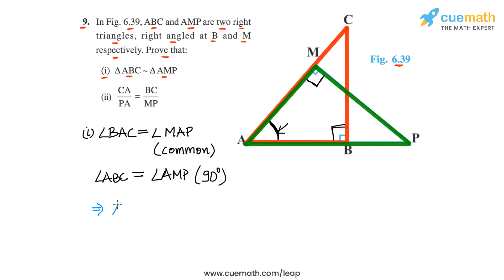Therefore, we can say that triangle ABC must be similar to the second triangle AMP, and observe the correspondence of the vertices correctly. Make sure that you get it right.